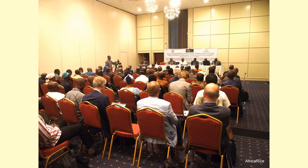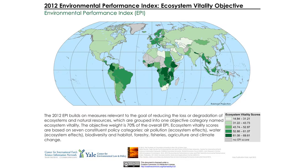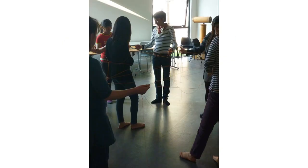Climate change is the long-term alteration of global weather patterns caused by the release of greenhouse gases into the atmosphere. The video shows examples of climate change, such as melting glaciers, rising sea levels, and extreme weather events. These human activities have had a negative impact on the environment, leading to the loss of biodiversity, the degradation of ecosystems, and the disruption of natural processes, including the decline of species, the loss of habitat, and the destruction of natural resources.